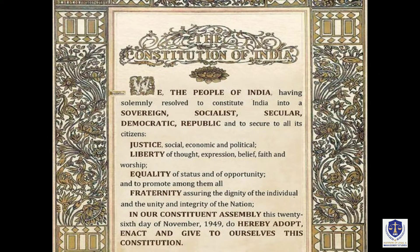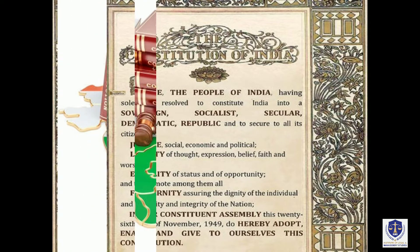Now let's look at the contents and the features. The preamble describes the nature of the state, the form of the government, the ideas of the nation and its people, and the objectives to be achieved. Through the words sovereign, socialist, secular, democratic and republic, the preamble declares the philosophy of the nation and the form of the government. These are the guiding principles and the source for the government and their actions.